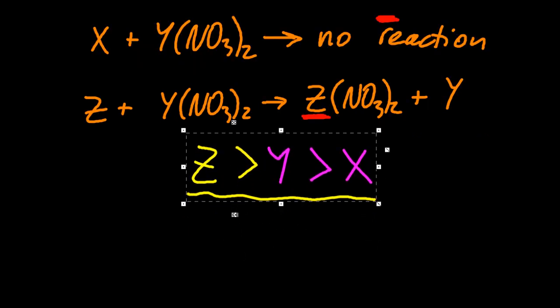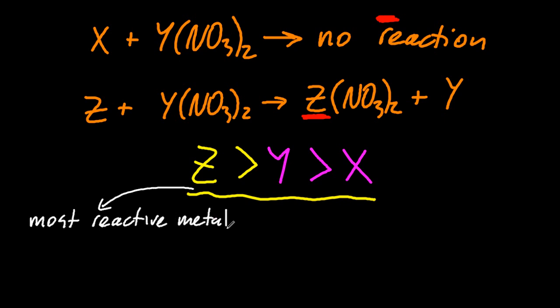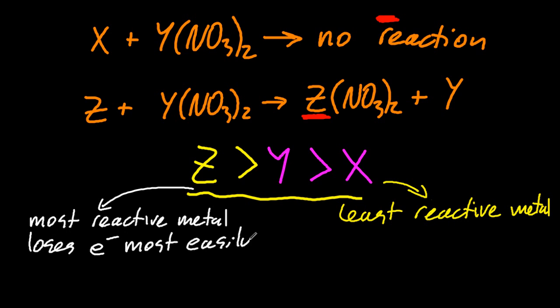So let's unpack that a little more. So Z is the most reactive metal there. And so X is the least reactive metal. This is all relatively, relative to each other. So metals like to lose electrons. So the most reactive metal loses electrons most easily. And the least reactive metal, well, that gains electrons most easily.